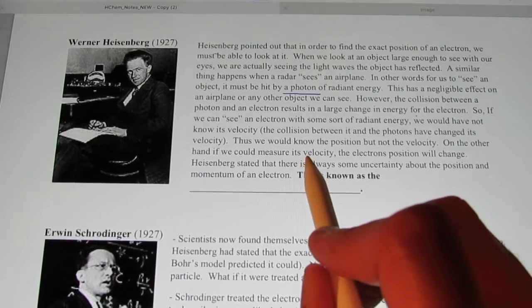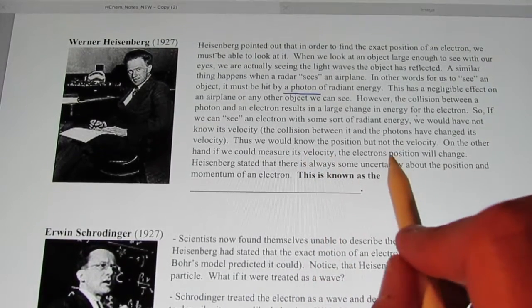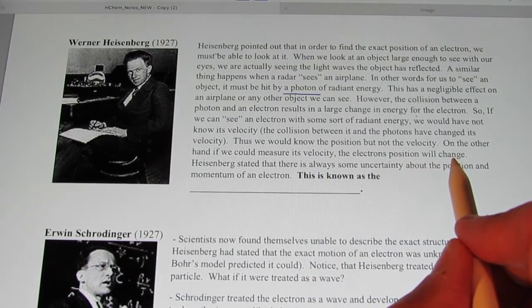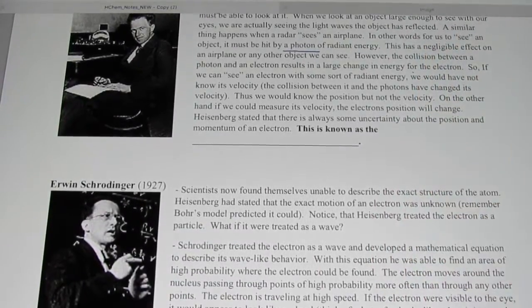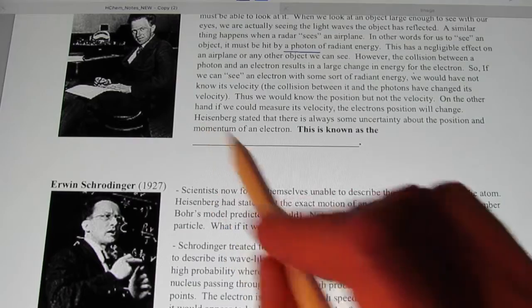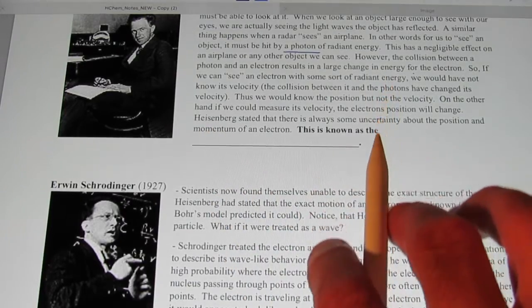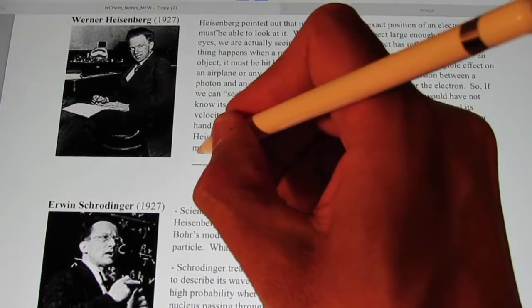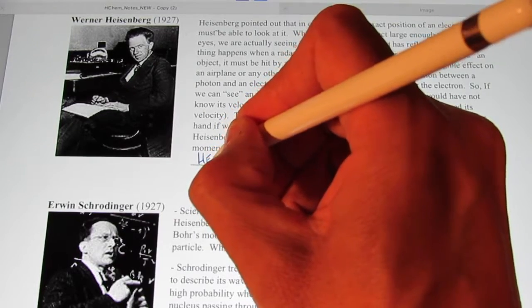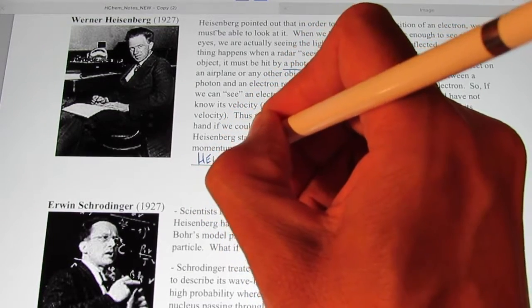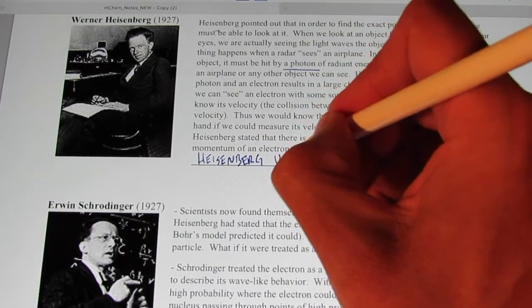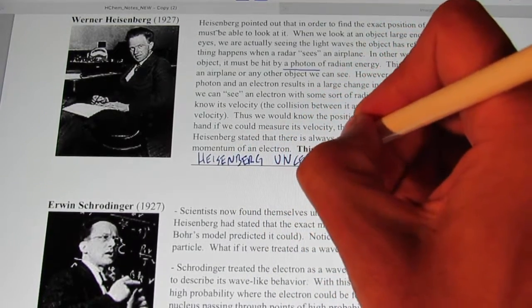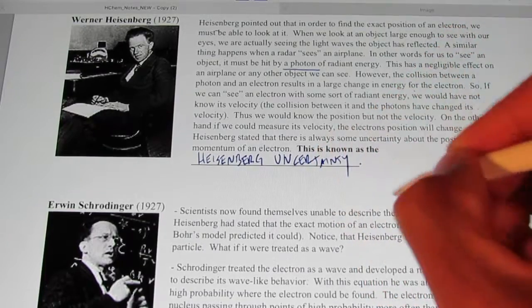On the other hand, if we could measure its velocity, the electron's position is now changing. Heisenberg stated that there is always some uncertainty about the position and the momentum of an electron. This is known as the Heisenberg Uncertainty Principle. Perhaps you've heard of it before.